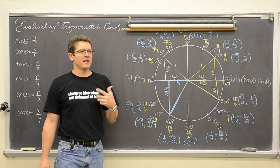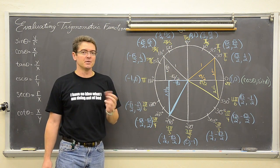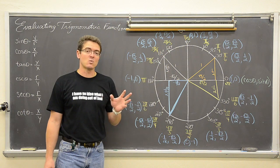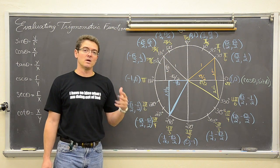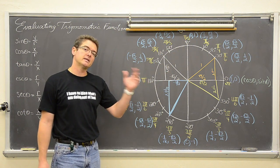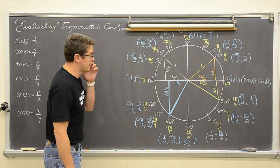That means no decimals. If the answer is square root of 2, leave it as square root of 2. Don't turn it into a long running decimal.